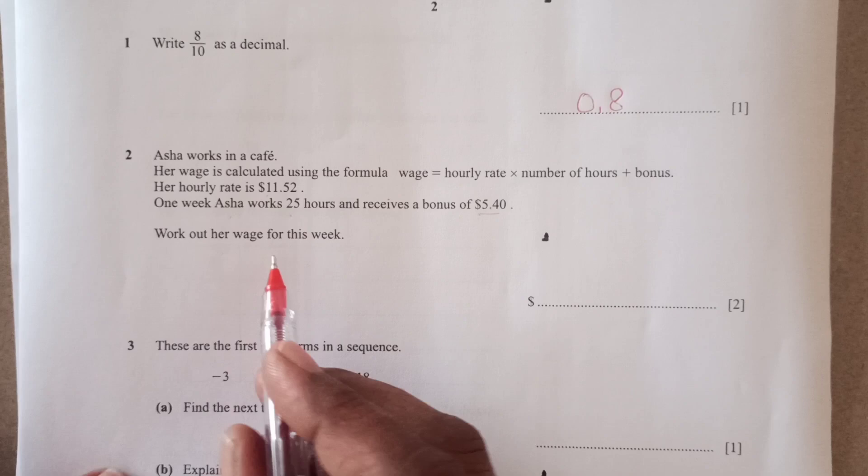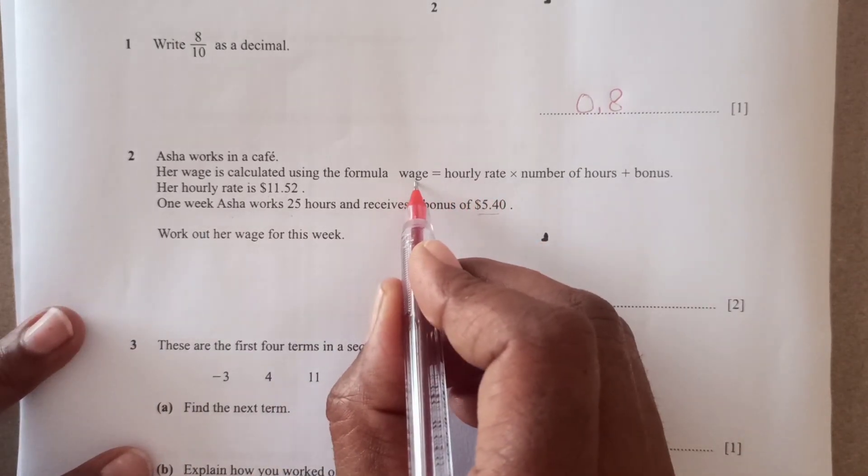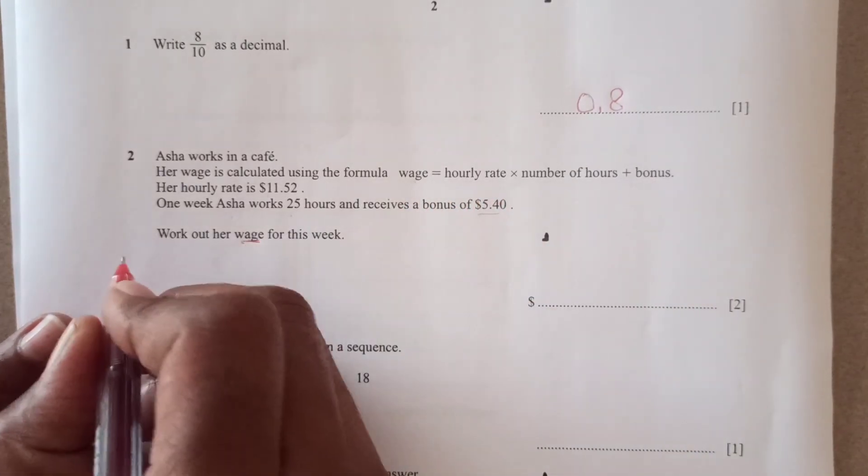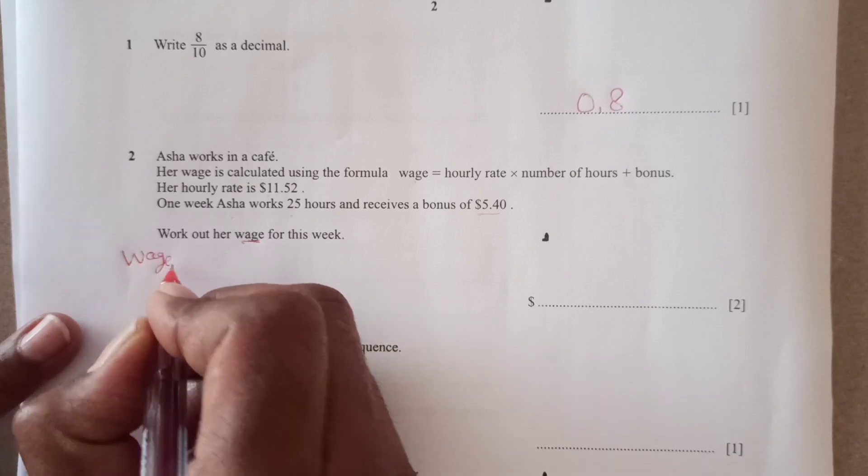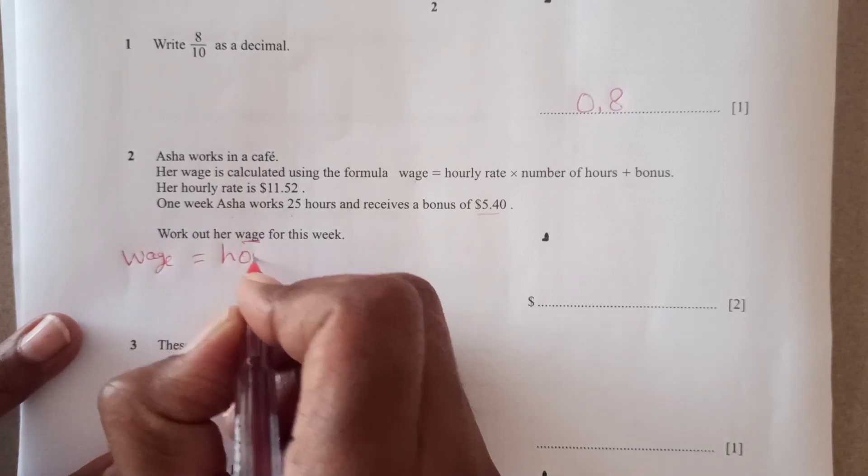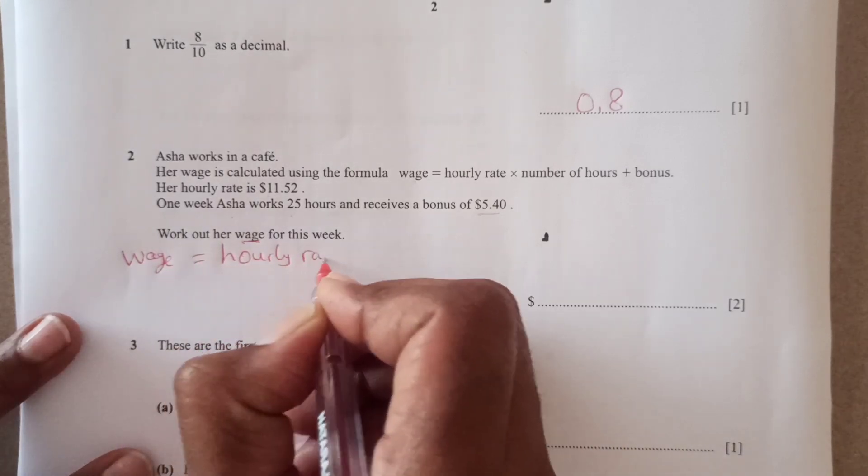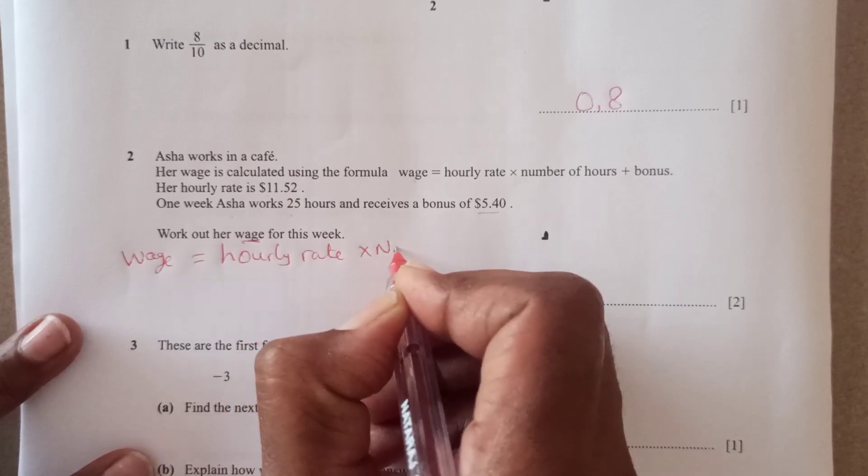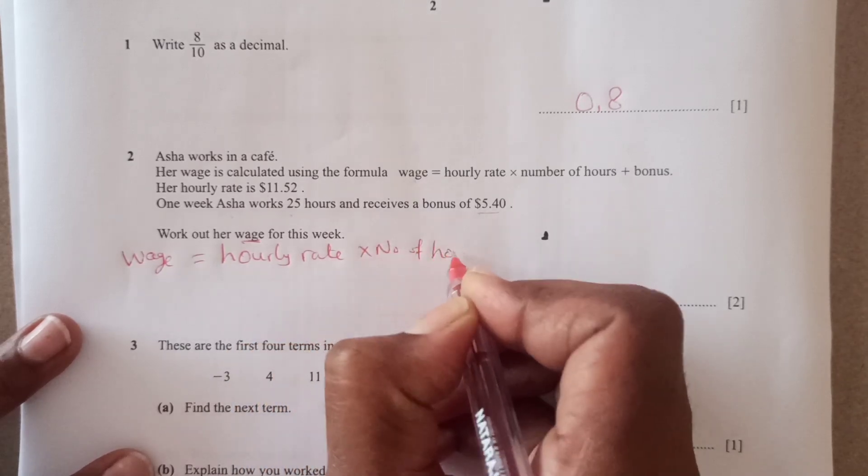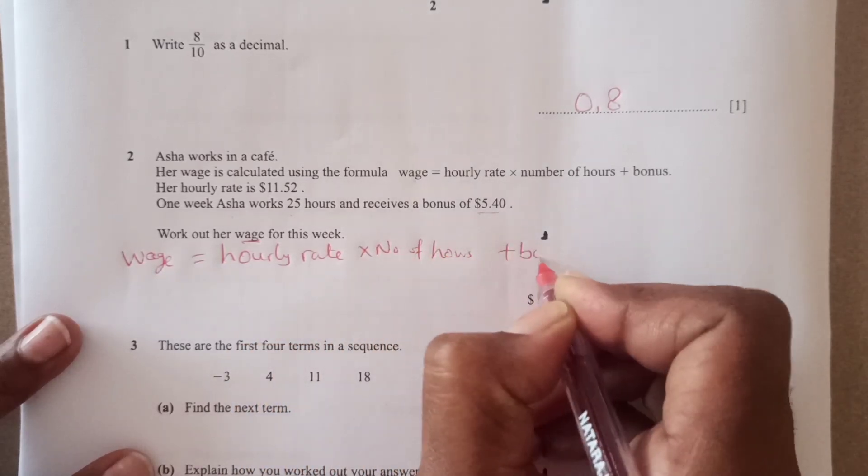So we are going to use this formula. We have wage equals to, let me rewrite here, hourly rate times number of hours plus bonus, right.